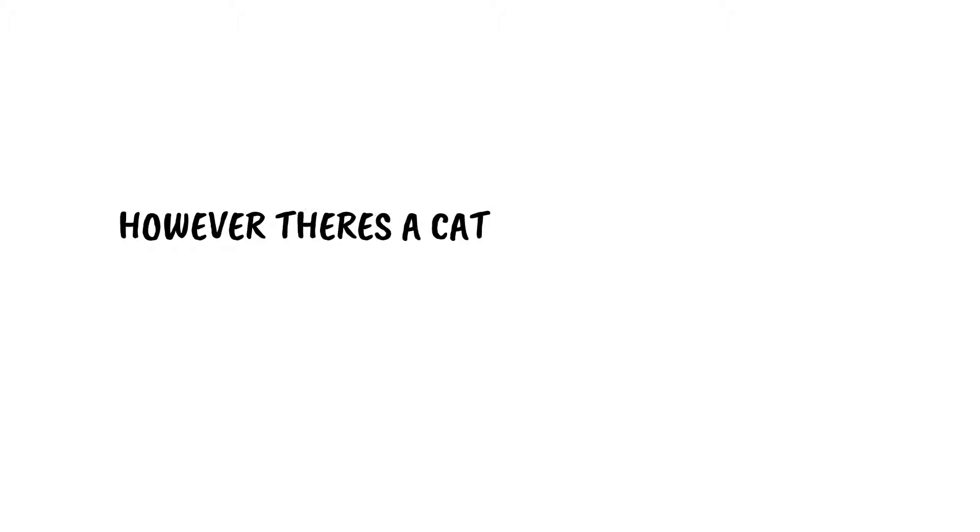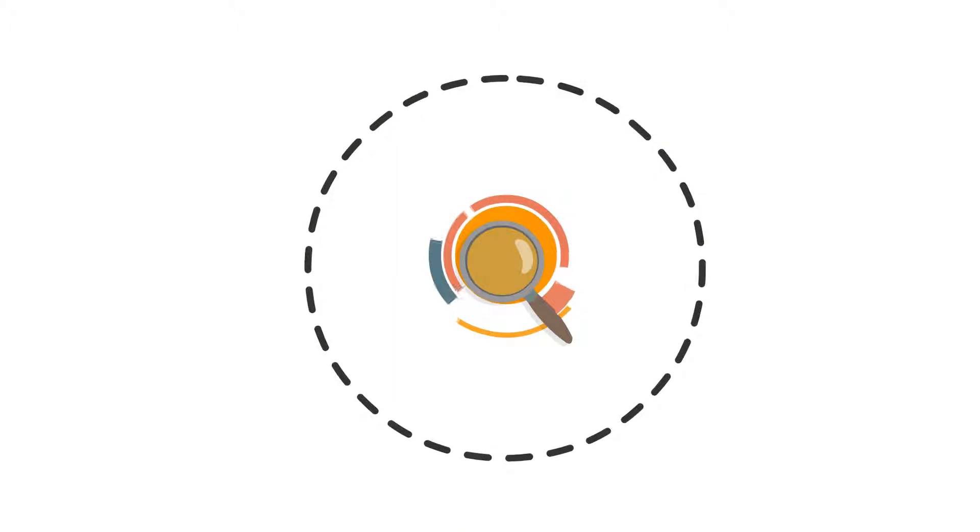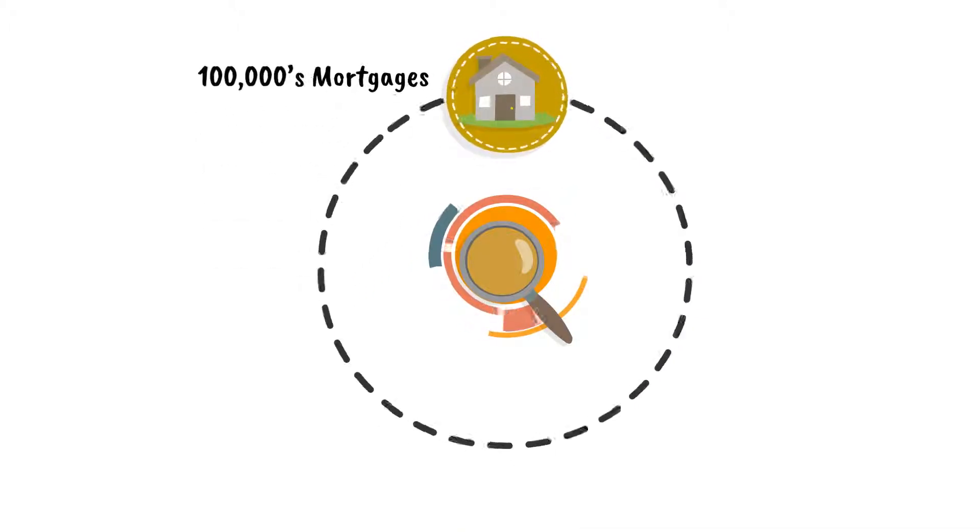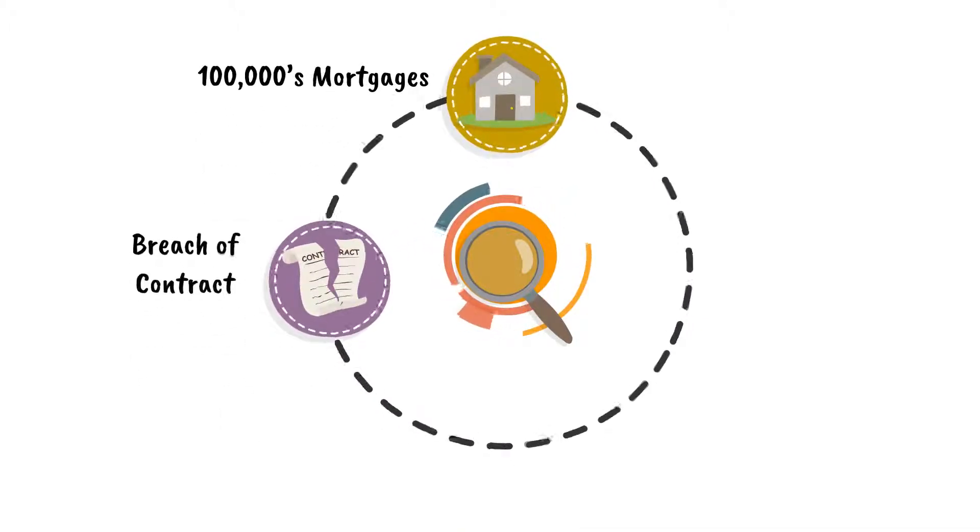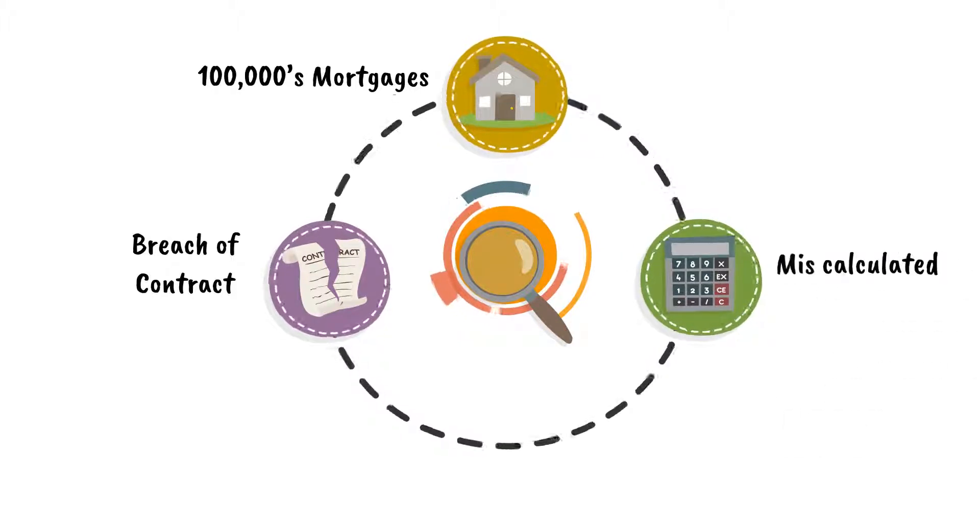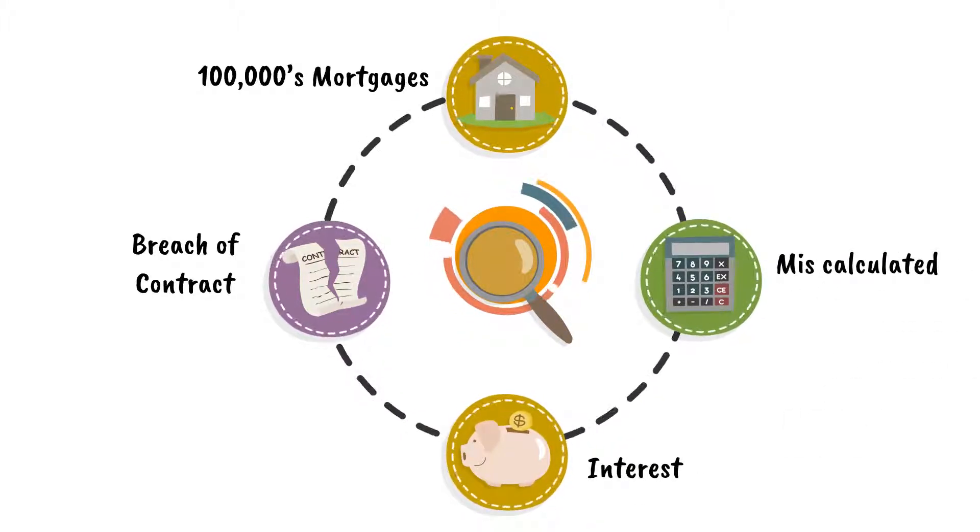However, there's a catch, and it's a big catch. Recent research has proven there are hundreds of thousands, perhaps millions of mortgages, which are in fact in what is known as a breach of contract, and have been miscalculated when it comes to the interest applied by the lenders.